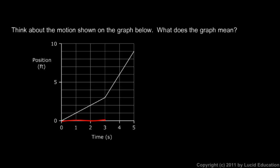This means that during these first three seconds, it was moving slowly where the graph isn't as steep, and then during the next two seconds, it was moving more quickly.